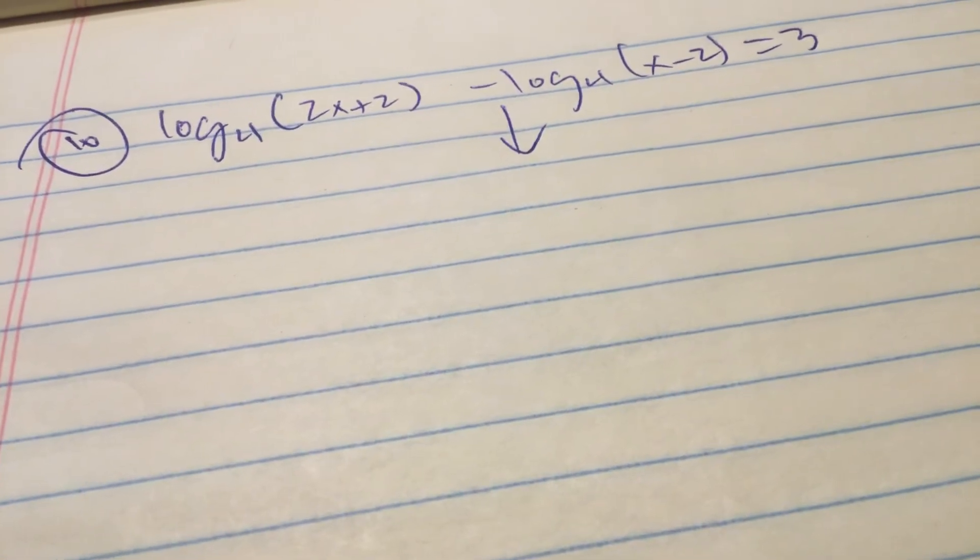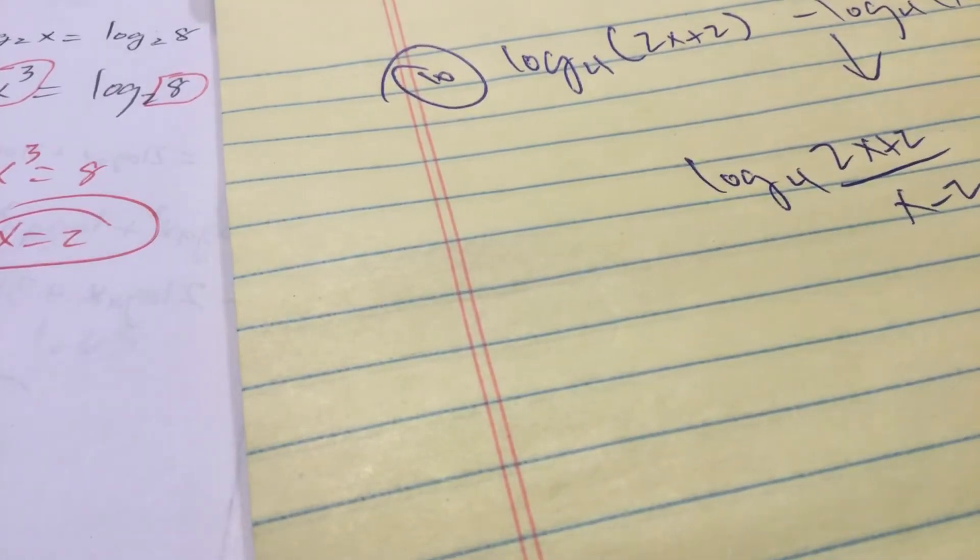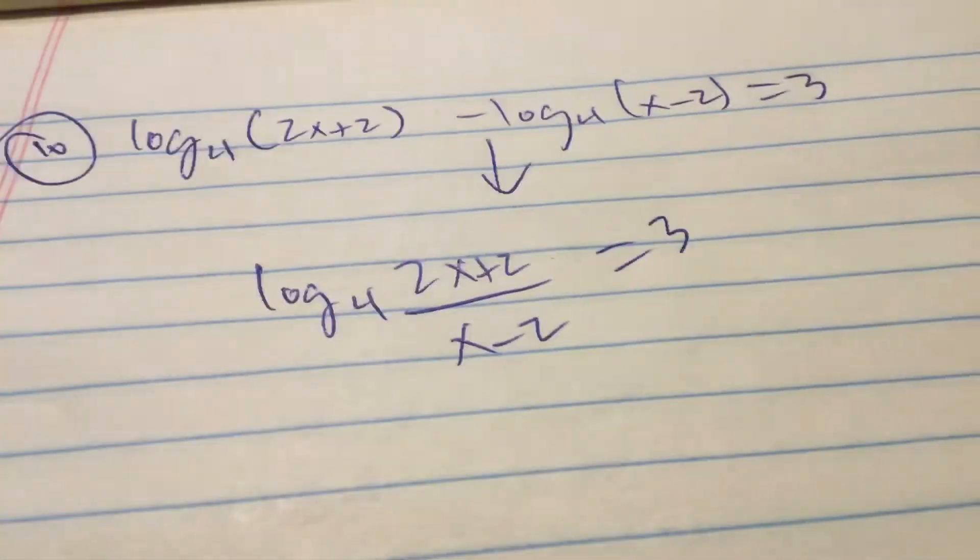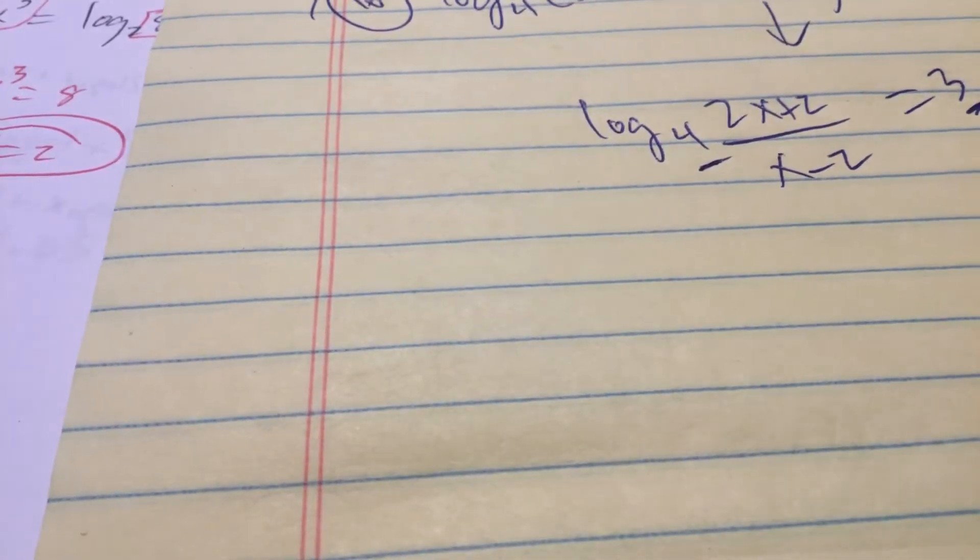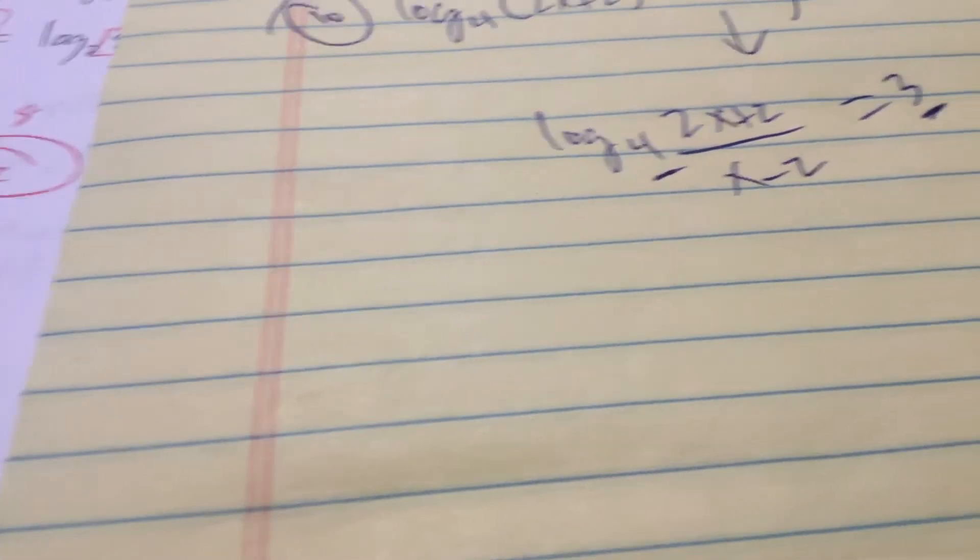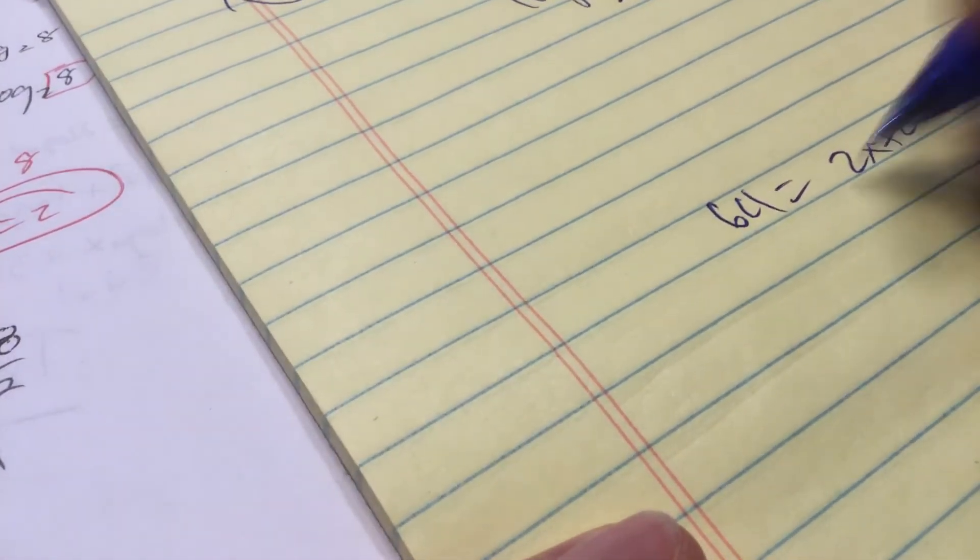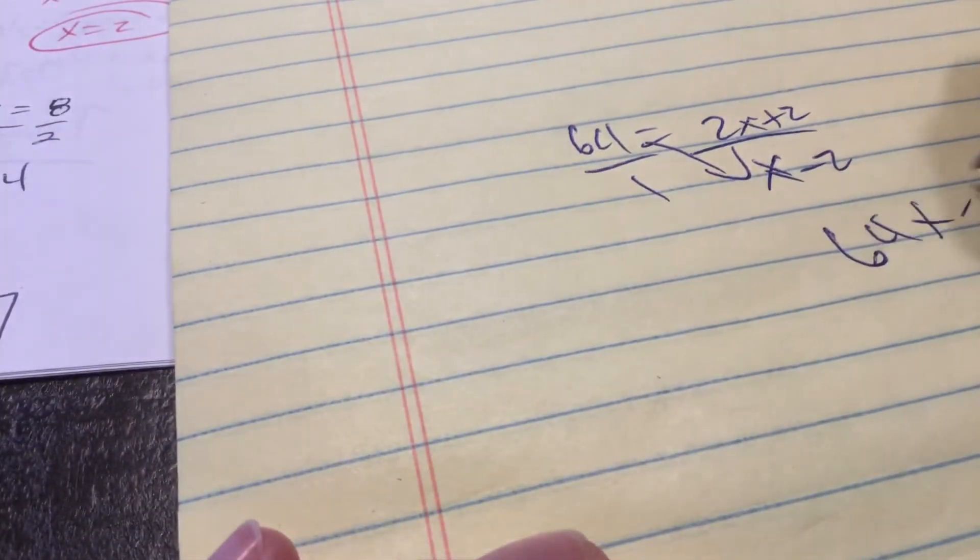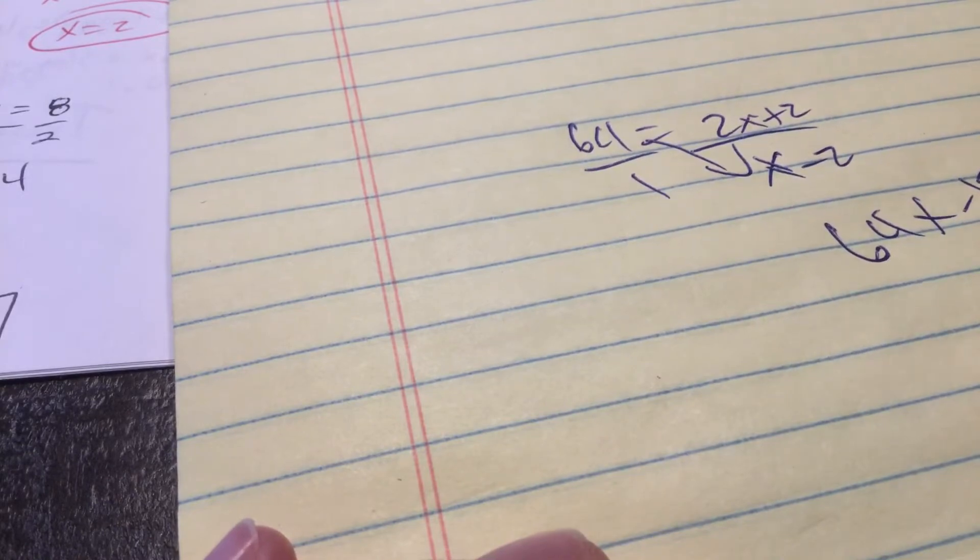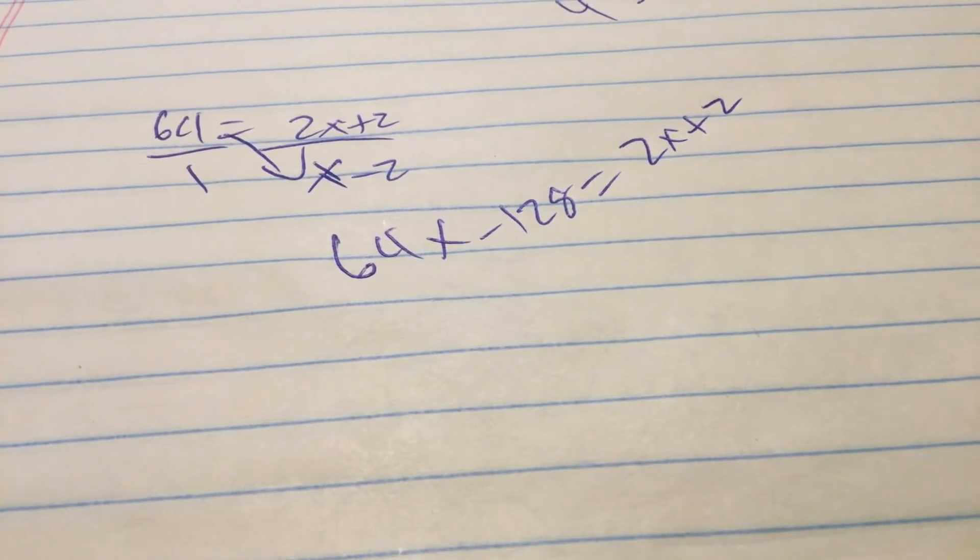Subtraction in the log world means division. This is log base 4 of 2x plus 2 divided by x minus 2 equals 3. This might be the last one for us. That means 4 is the base. 3 is the exponent. 4 to the third is 2x plus 2 over x minus 2. You can hear it on the monitor. All right. Anyway, we're going to finish this one up real quick. That means 64 is equal to 2x plus 2 over x minus 2. We've got to cross multiply here. 64. Elsie doesn't know we're making a video here. My wife is really killing it.